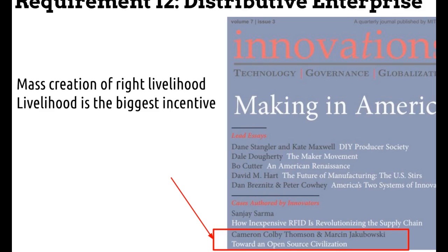The next requirement is the distributive enterprise — the idea that we're creating enterprises and developing not only products but enterprises around those products. We wrote about it first in the MIT Innovations Journal. We care about mass creation of right livelihoods, getting people involved in production, distributing productivity as far and wide as possible, according to principles of Jeffersonian democracy — distribution of power, distribution of wealth, all of that by local production. We care about global information flows and global sourcing only if we cannot provide it locally. But just about anything can be provided locally if you have rocks, sunlight, plants, soil, and water.